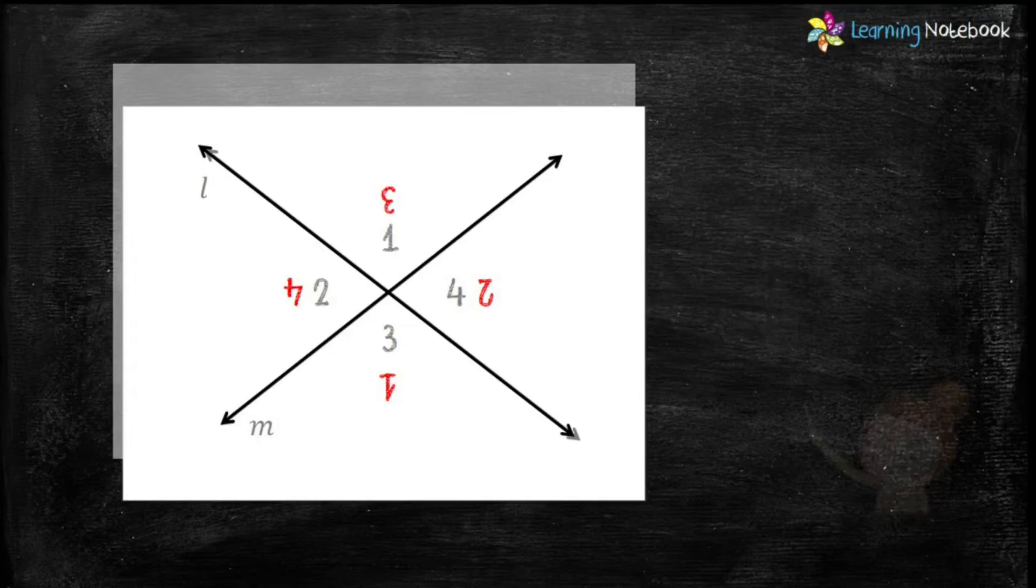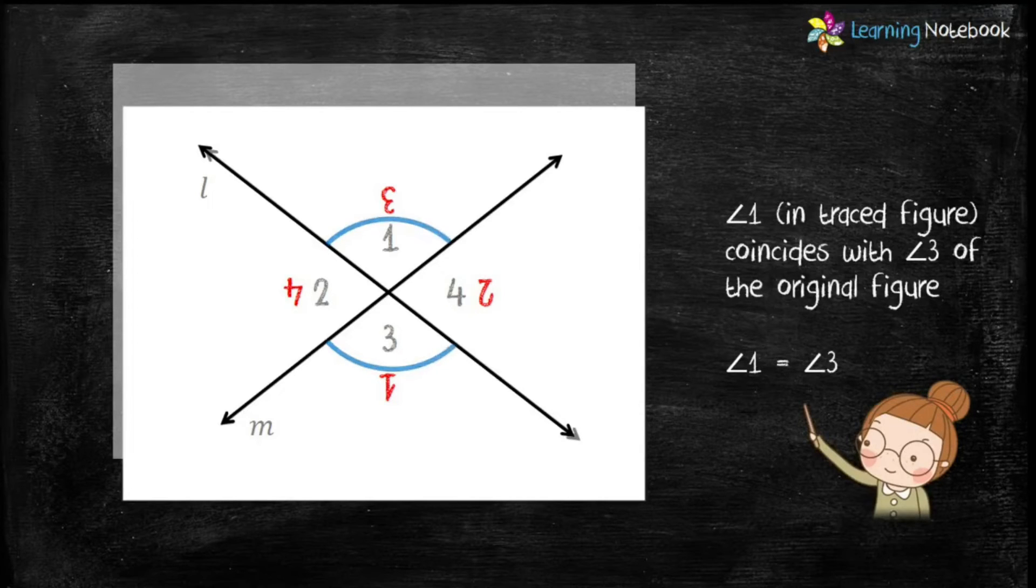Students, you will observe that angle 1 in the traced figure coincides with angle 3 of the original figure. This means angle 1 equals angle 3.